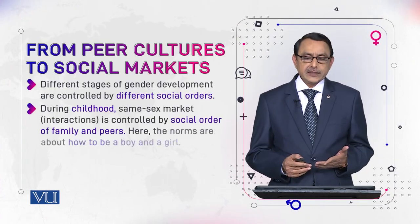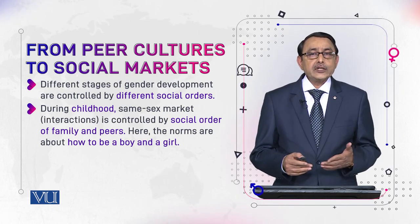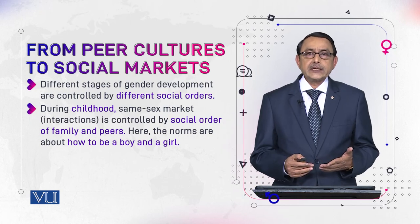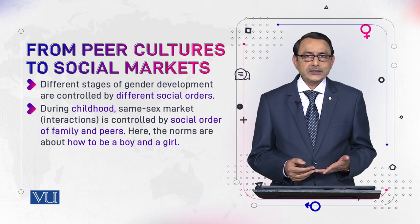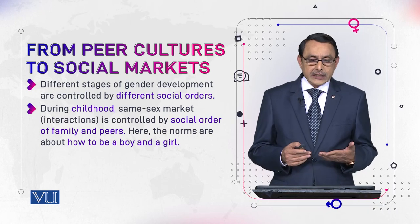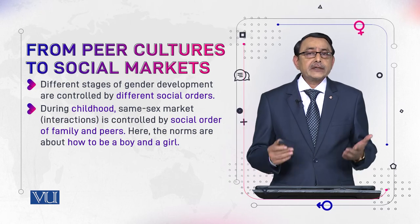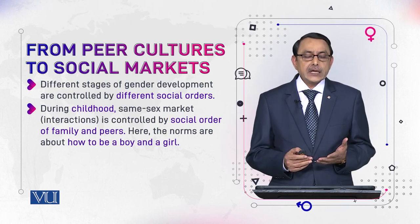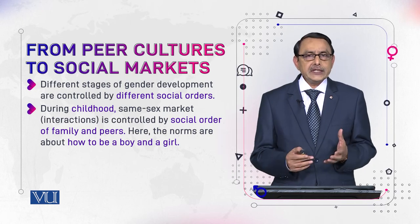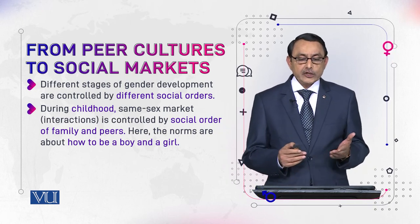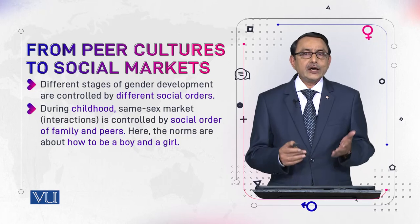Different stages of gender development are controlled by different social orders. Every time we enter a new phase or context, we encounter a new set of norms and a new social order. During childhood, the same-sex market — our interactions — is controlled by the social order of family and peers. The focus of those norms is how to be a boy and how to be a girl.